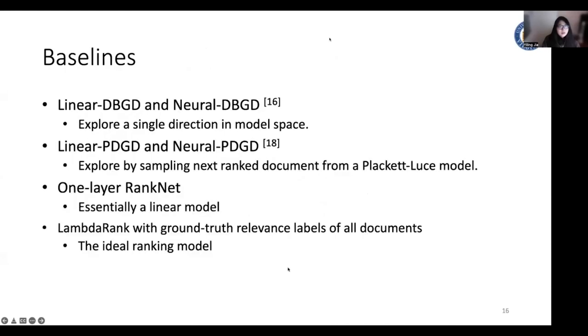And here are the baselines. So we compare our model with all the existing state-of-the-art online rank models, the Dueling Bandit Gradient Descent and the PDGD. We have both the linear and neural model. We also import a one-layer RankNet for comparison. This model can be viewed as a linear model. And we have this Lambda rank with ground truth relevance labels of all documents. This can be viewed as the ideal ranking model.